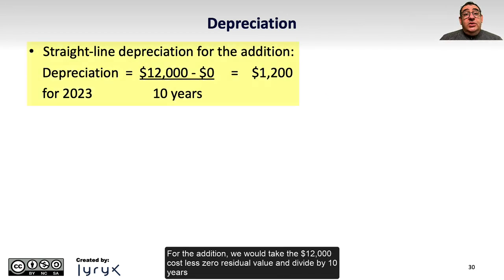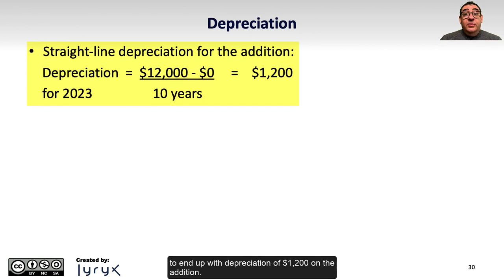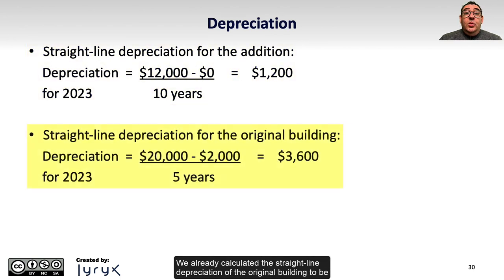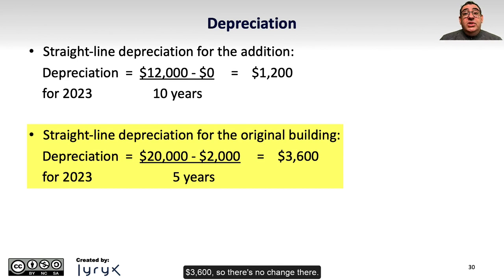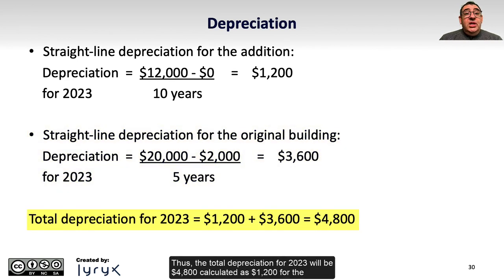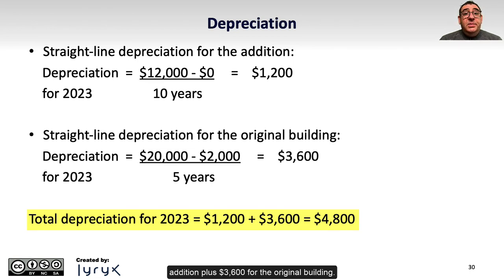For the addition, we would take the $12,000 cost less zero residual value and divide by 10 years to end up with depreciation of $1,200 on the addition. We already calculated the straight-line depreciation of the original building to be $3,600, so there's no change there. Thus the total depreciation for 2023 will be $4,800, calculated as $1,200 for the addition plus $3,600 for the original building.